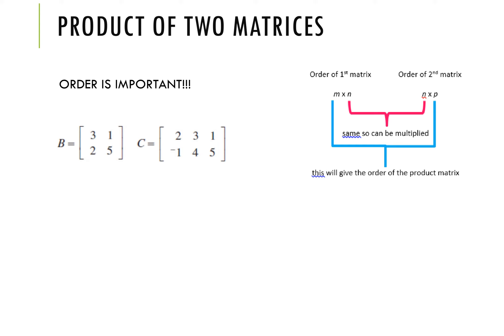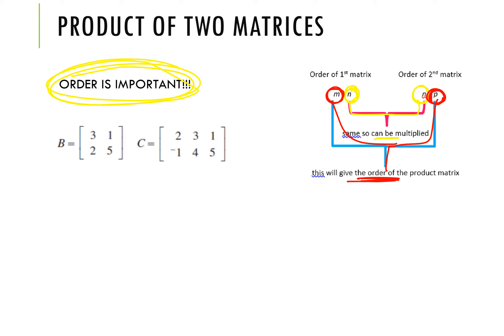The final basic skill is finding the product — multiplying two matrices together. Order is very important here; you must consider the size of the matrices before you multiply. For the product to be defined, the number of columns in the first matrix must equal the number of rows in the second matrix. The size of the answer is given by the number of rows in the first matrix by the number of columns in the second matrix — the outer values.